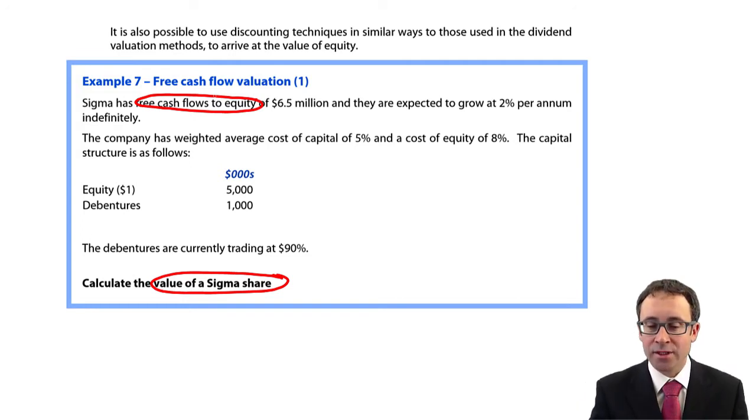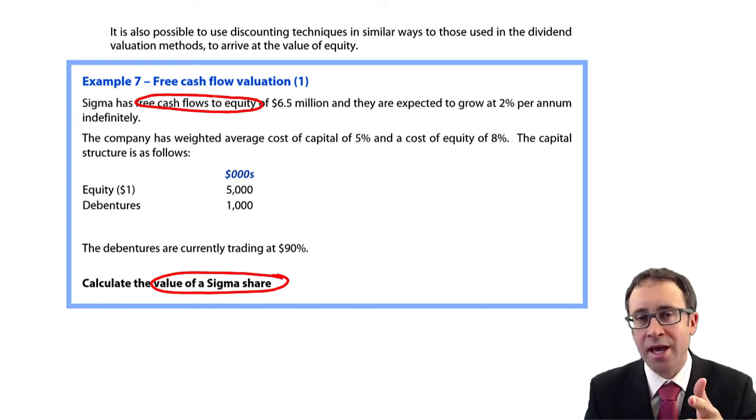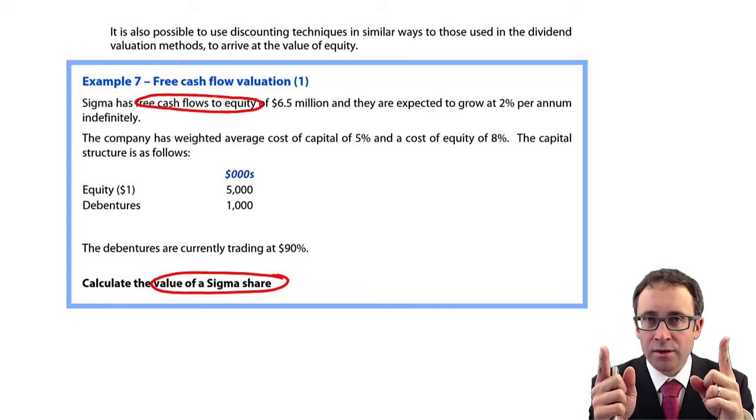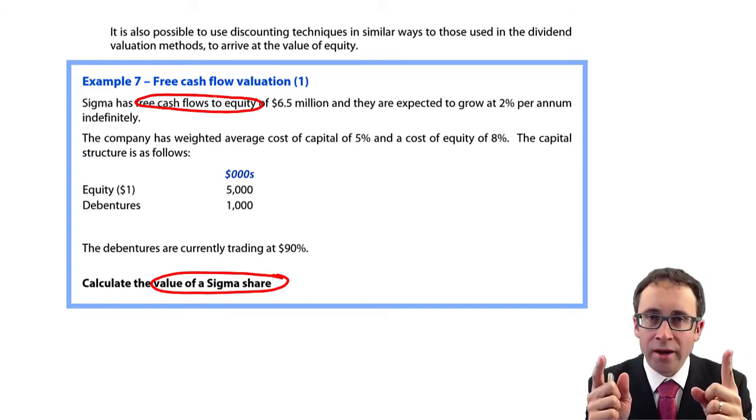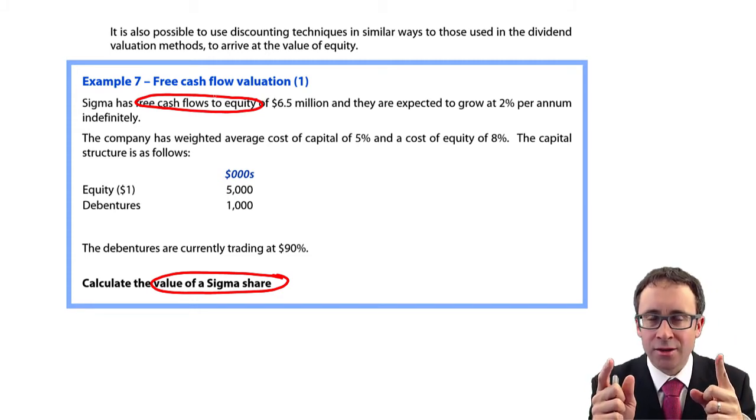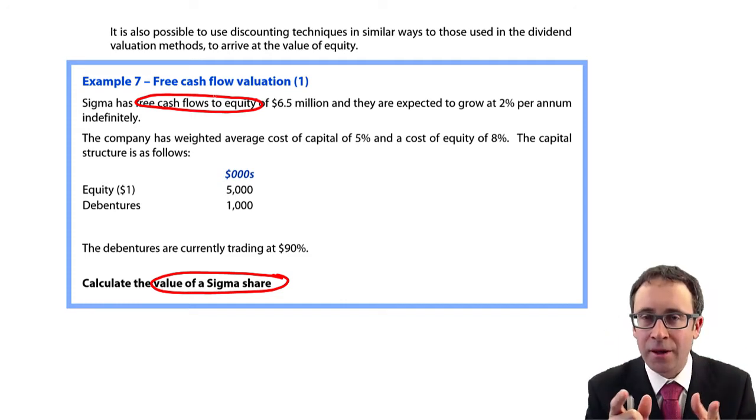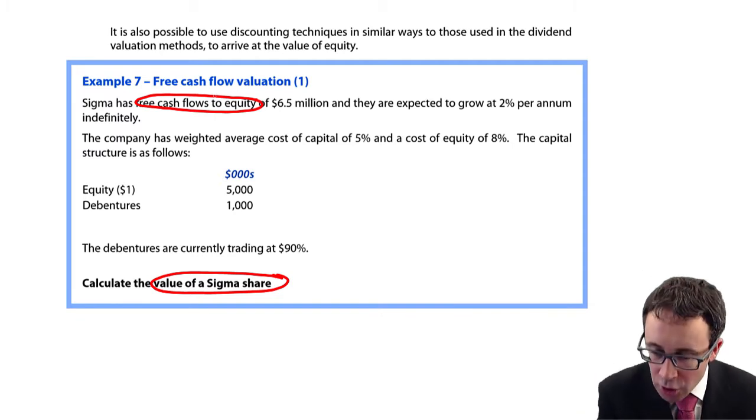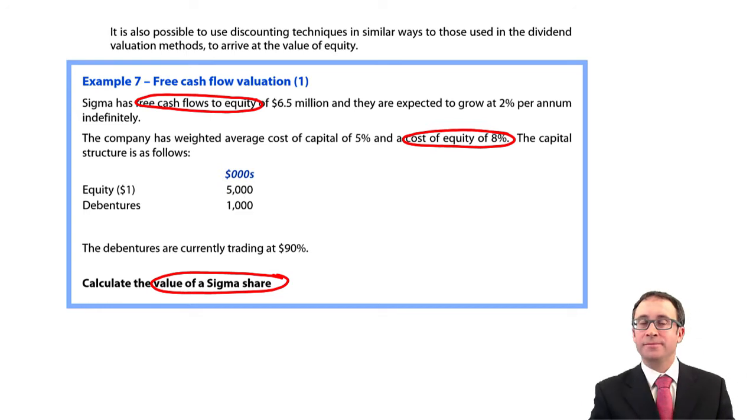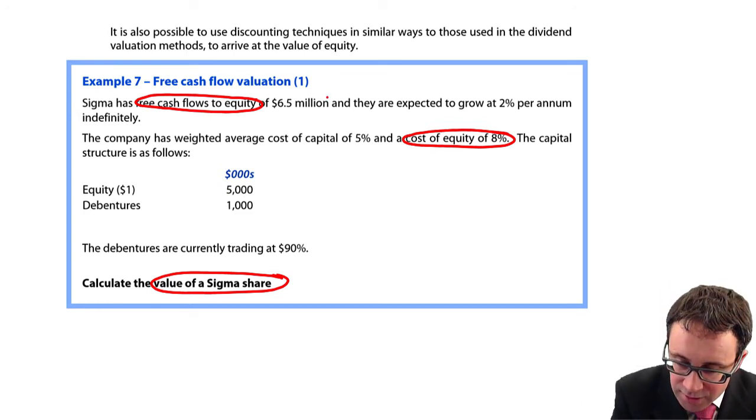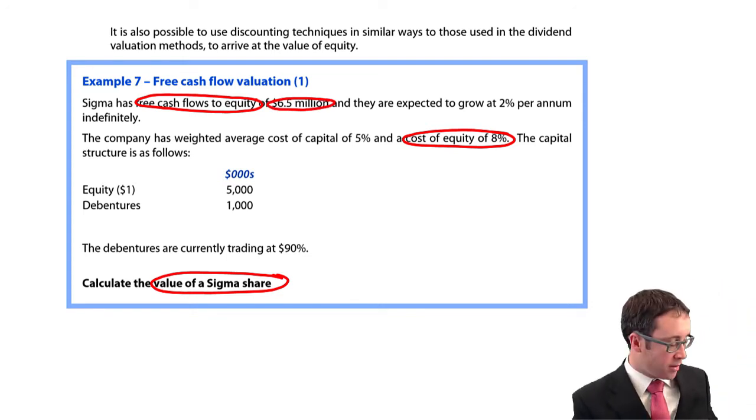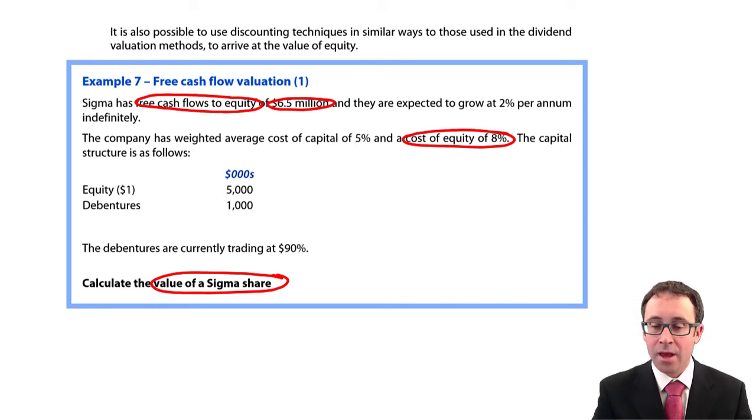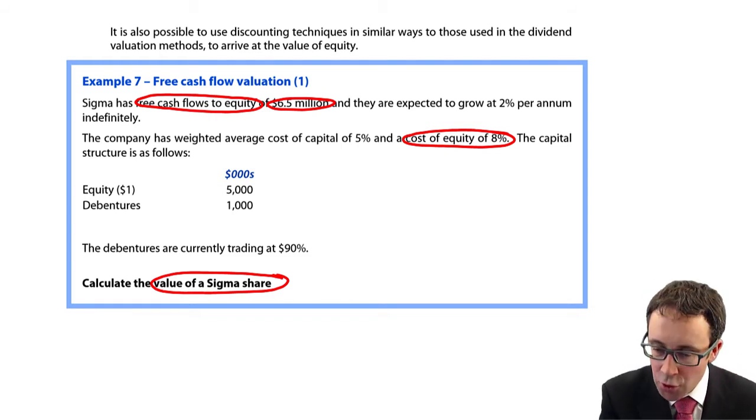Given that we have the free cash flow to equity, we are going to have to do some discounting to get to present value. My question to you is if we're given the free cash flow to equity, what discount rate do we use to discount back to present value? Is it the WACC or is it the cost of equity? Hands up if you think it's the cost of equity. Brilliant. If you've got the free cash flow to equity, you will need to discount those free cash flow to equity by the return required by the equity holders, which is the cost of equity. Those free cash flow to equity are 6.5 million dollars. Those cash flows are going to be discounted at the 8%.